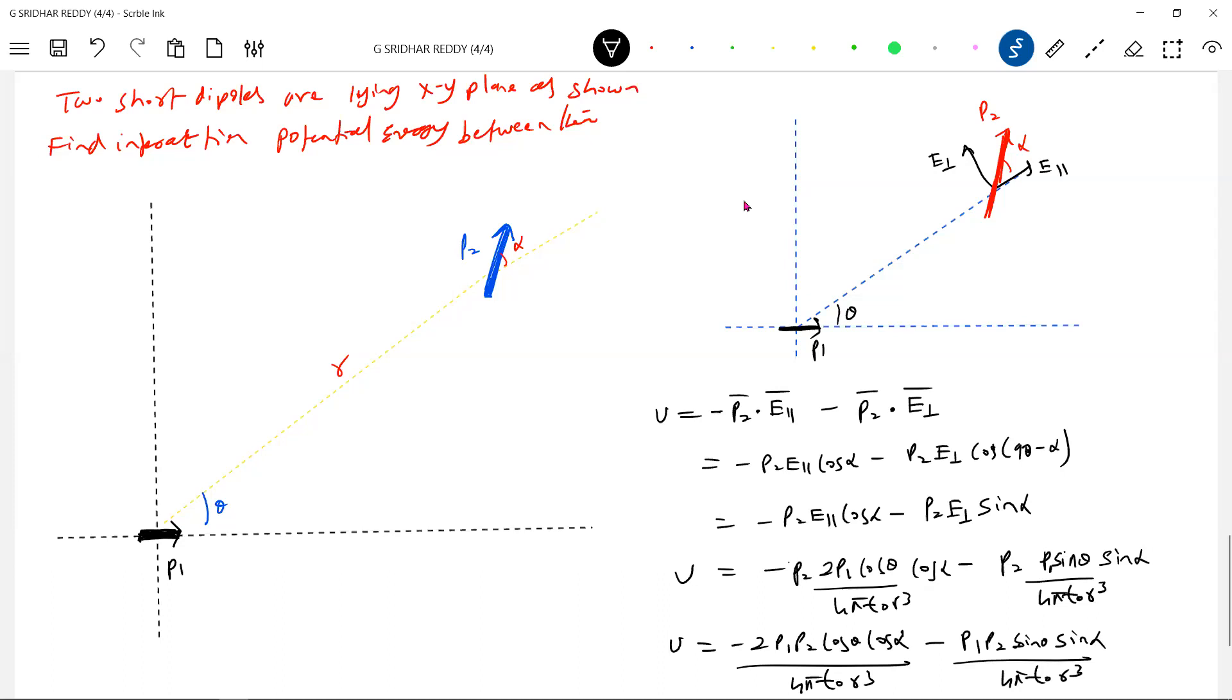So we get (P1P2 / 4πε₀R³)[2cosθcosα - sinθsinα]. In any arbitrary position, no matter how they're oriented, we can work out. We have to be careful the way we deal. Make the problem simple. Better go for this approach.